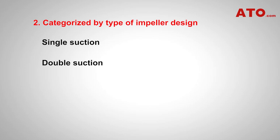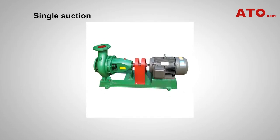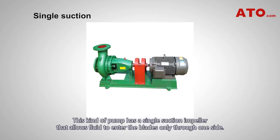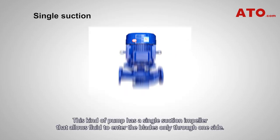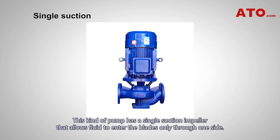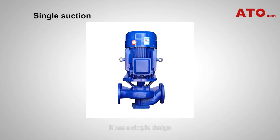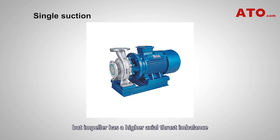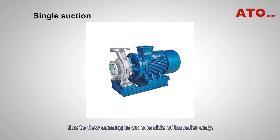Categorized by type of impeller design — single suction: this kind of pump has a single suction impeller that allows fluid to enter the blades only through one side. It has a simple design, but the impeller has a higher axial thrust imbalance due to flow coming in on one side of the impeller only.